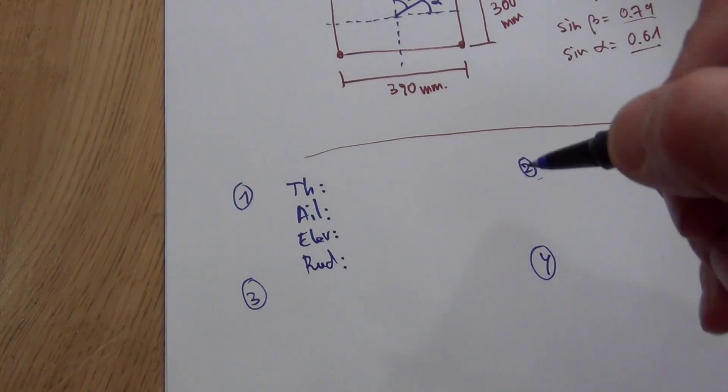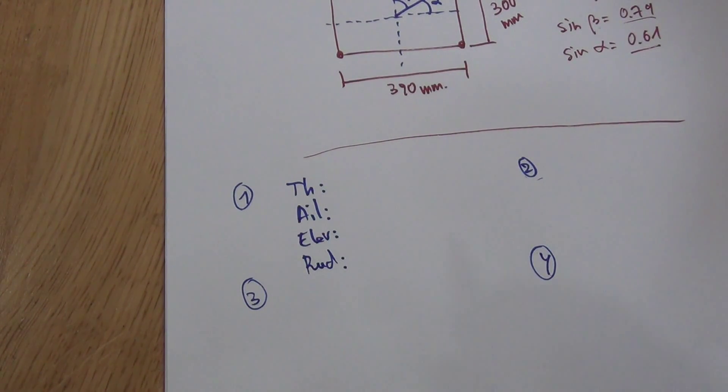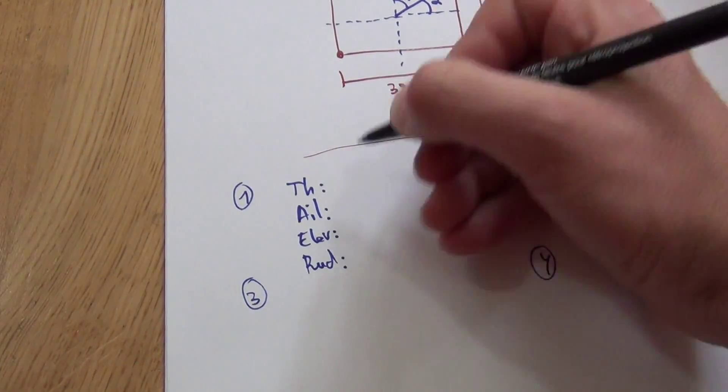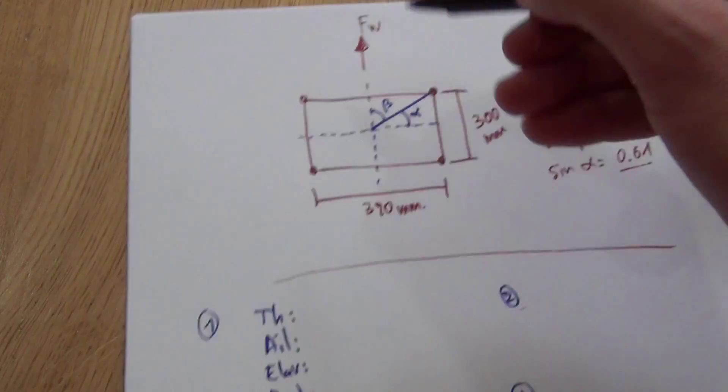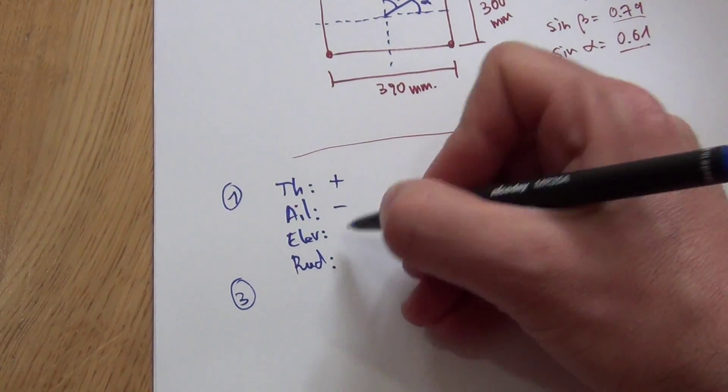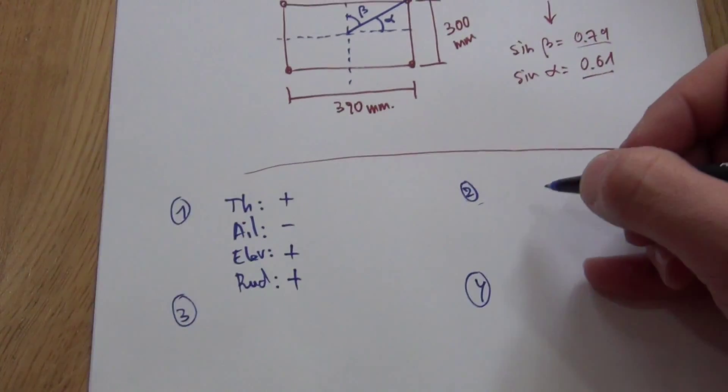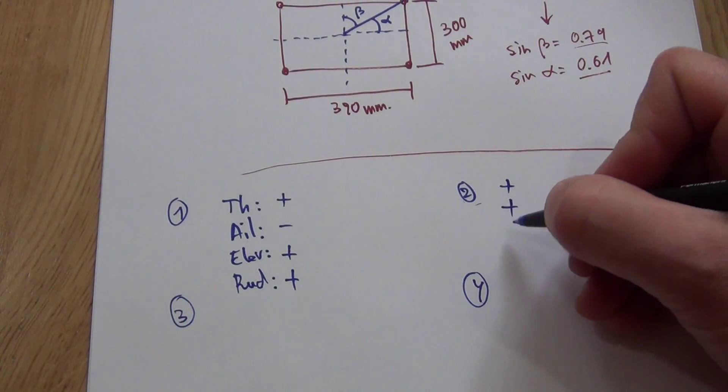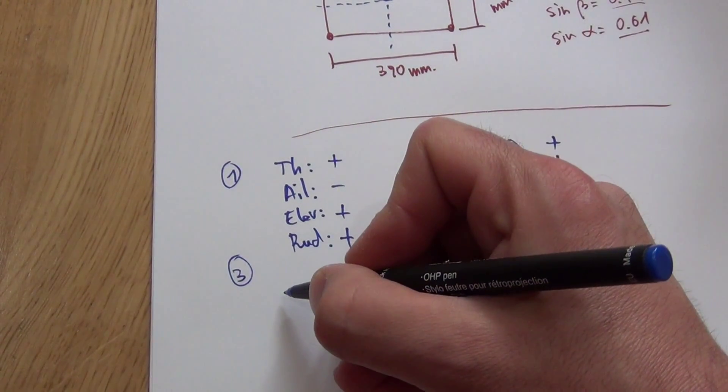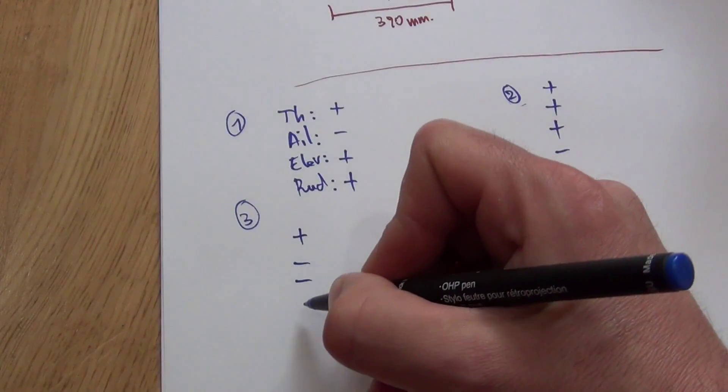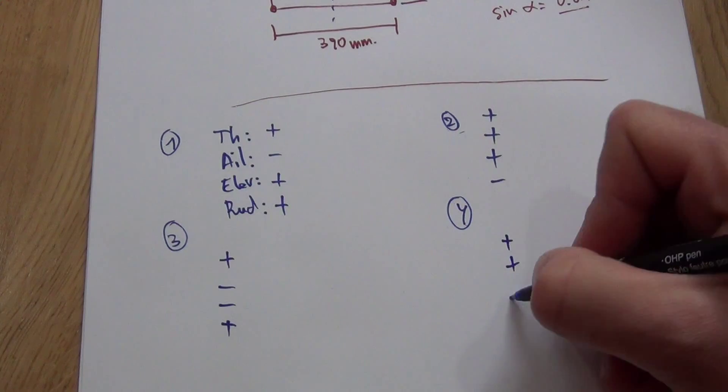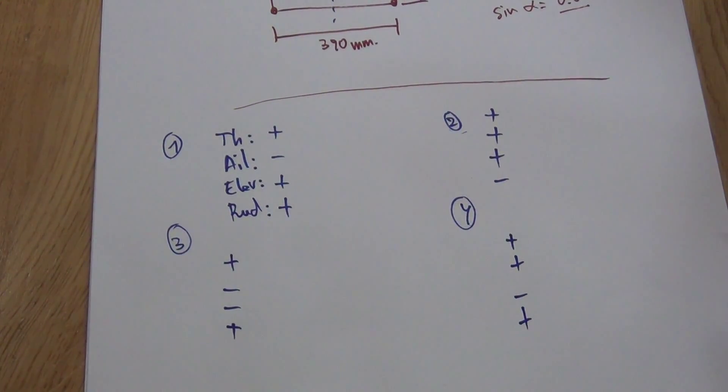So in case of a quadcopter, the signs will not change regardless of the distances you have here between the motors. So you just keep them in the same way, which are plus, minus, plus, plus for motor one. For motor two you have plus, plus, plus, minus. For motor three is plus, minus, minus, plus. And for motor four is plus, plus, minus, plus.